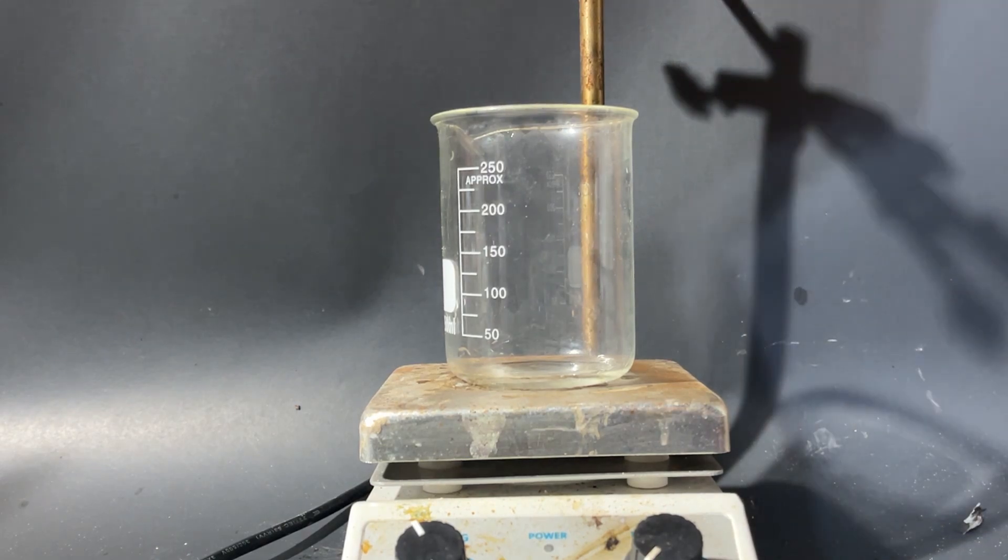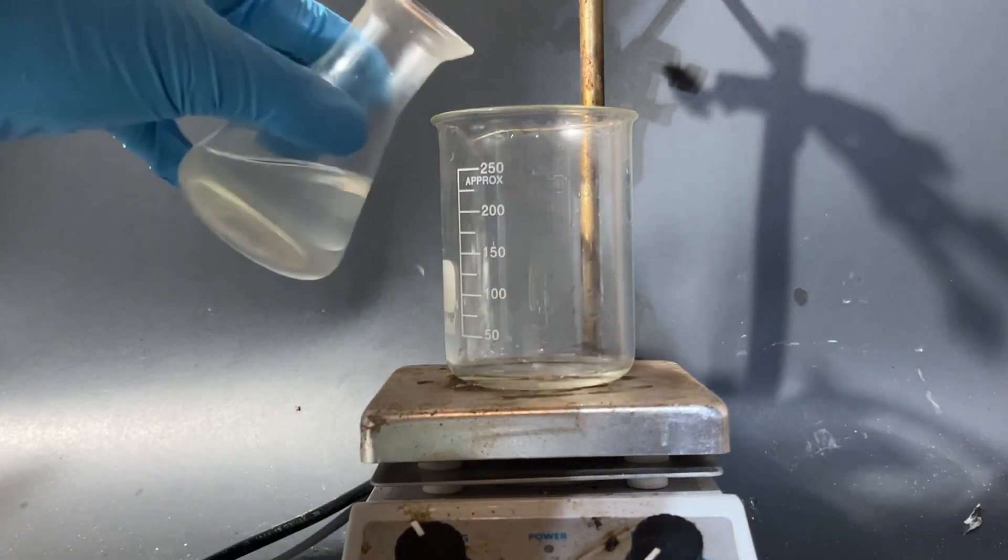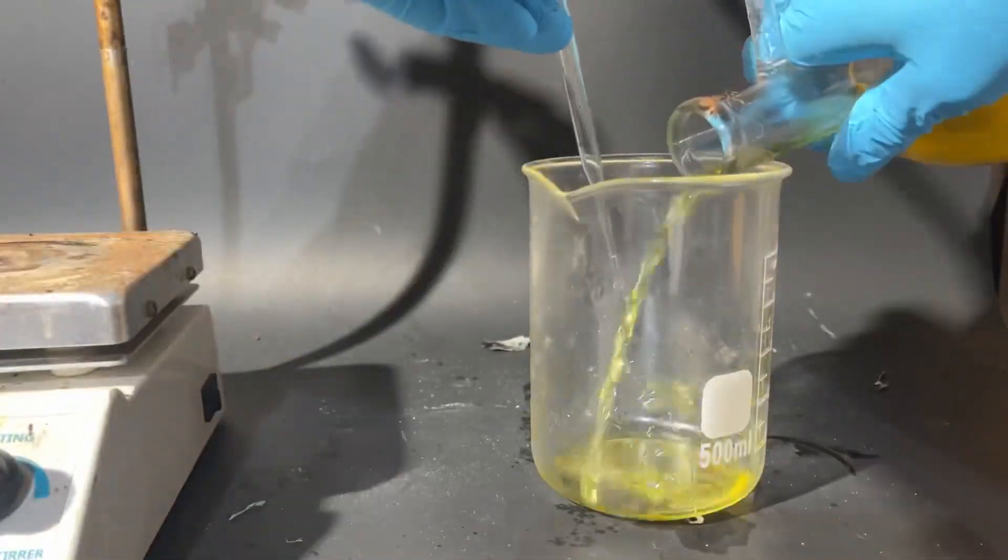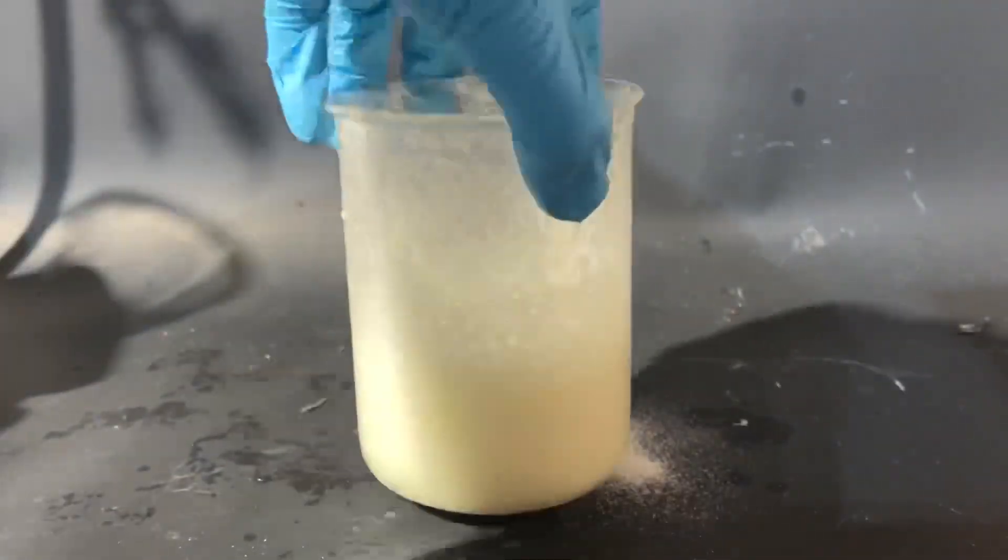After about 2 hours of this, I transfer the solution of hopefully ammonium chloride into a beaker, and I set it up on my hot plate for a recrystallization. While this happens, I transfer the hydrochloric acid from my flask to a beaker, and I edge it with sodium bicarbonate.